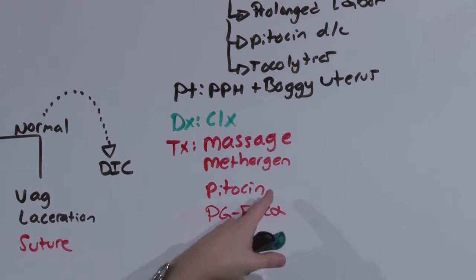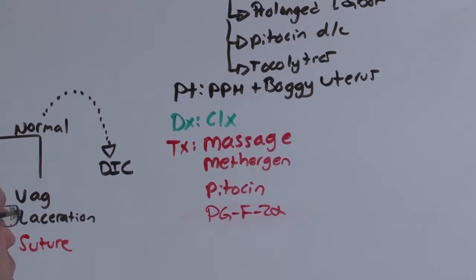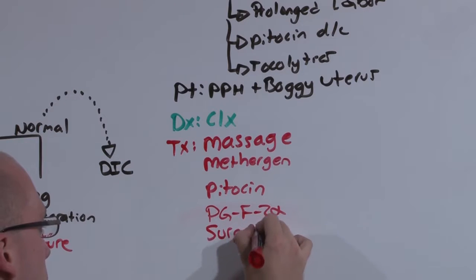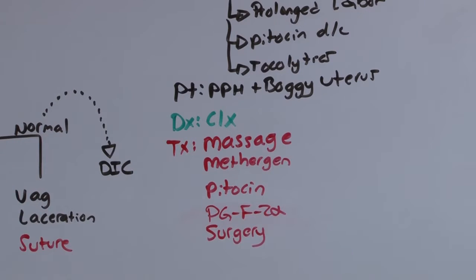But ultimately, if you can't get this uterus to contract down, you're going to have to go to surgery. This is the most common cause of postpartum hemorrhage.